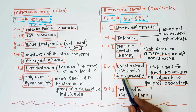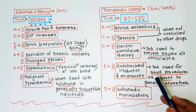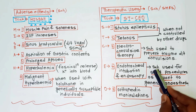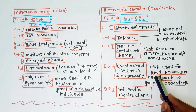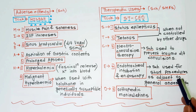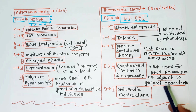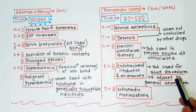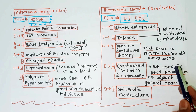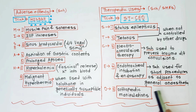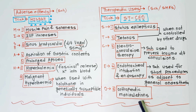E for endotracheal intubation and endoscopy — these are short surgical procedures where succinylcholine is used as an adjuvant to general anesthesia. This is the most important use: skeletal muscle relaxants as adjuvants to general anesthetics. O for orthopedic manipulations.